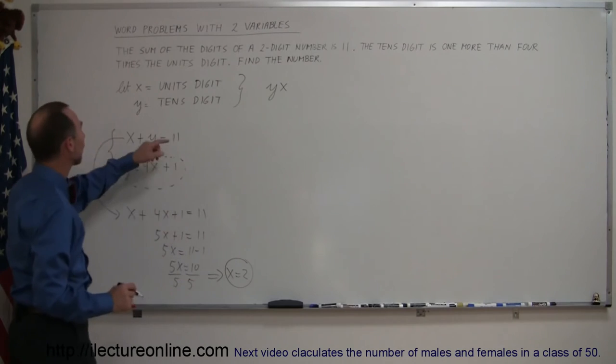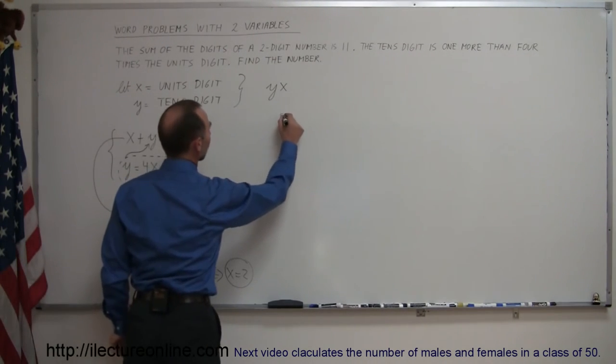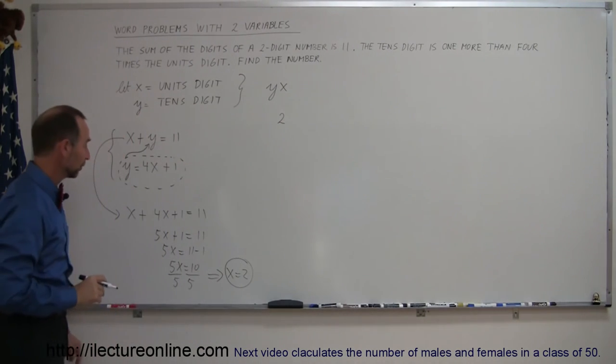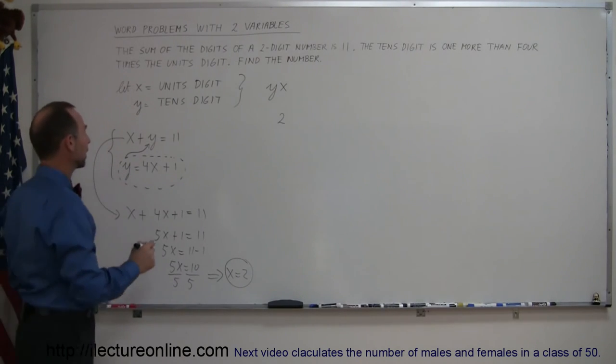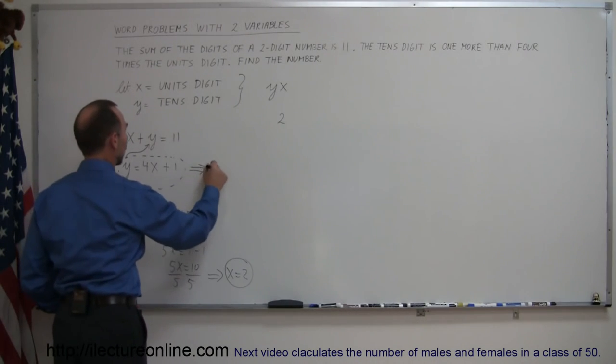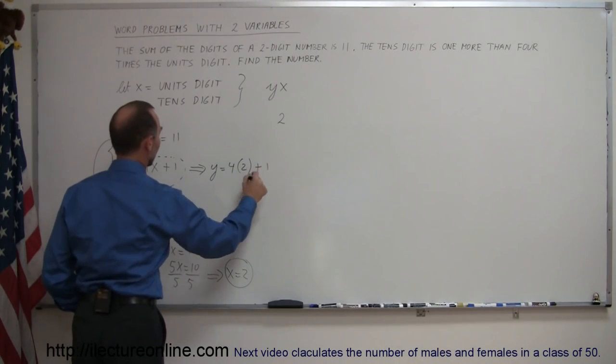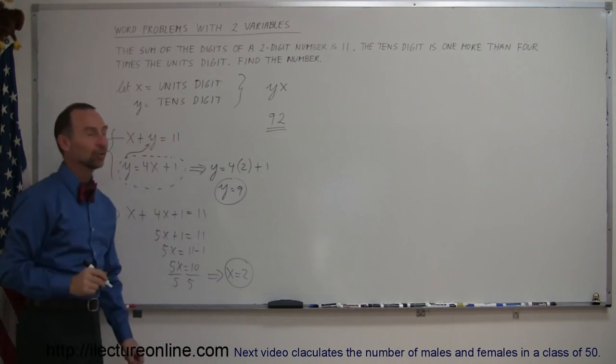We go back to what x represented—the units digit. So the number has 2 in the units digit. We still have to figure out what y equals. We can go back to one of our equations and say that y equals 4 times the units digit, which is 2, plus 1. So y equals 9. There's our number: the number is 92.